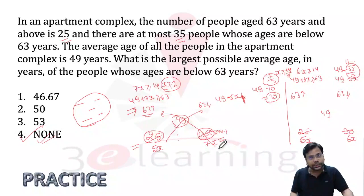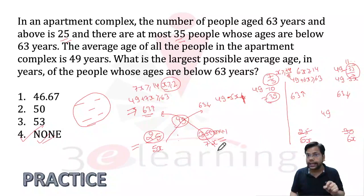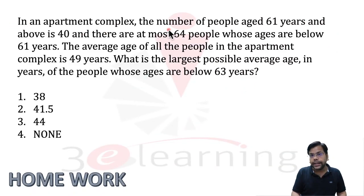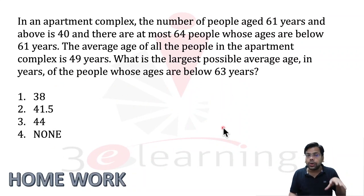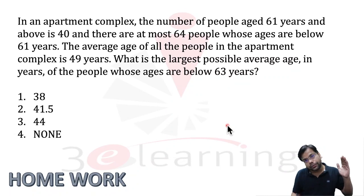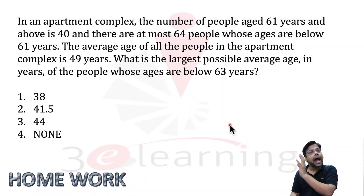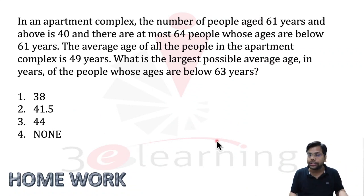There is no need to use x and y — if you solve with x and y that is fine too; it's all about how you solve. Now it's your time to prove yourself. Solve the homework question: In an apartment, the number of people 61 years and above is 40; there are at most 64 people below 61 years; the average age is 49 years. Find the largest possible average age. Post your answers in the comments. All the best, God bless you!